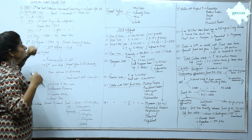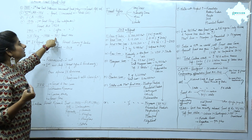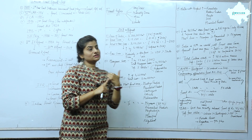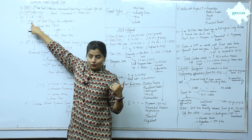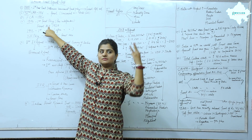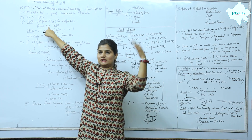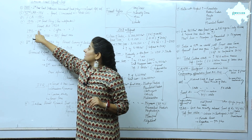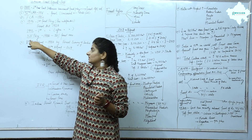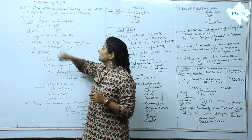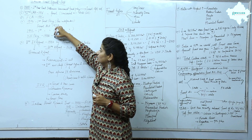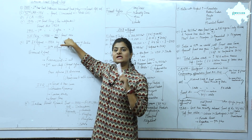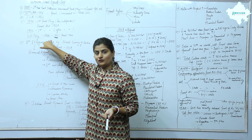Under the Forest Act of 1927, there are three categories: Reserve Forest, Village Forest, and Protected Forest. After independence, the new Forest Policy in 1988 stated that 33% of land at the national level should be under forest area. So: first Forest Policy in 1894, Forest Act of 1927 with three forest categories, first post-independence Forest Policy in 1952, and the 33% forest area mandate under the 1988 Forest Policy.